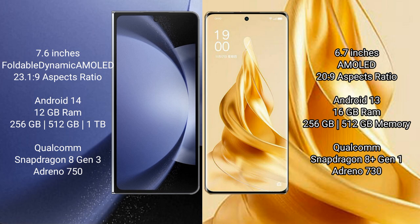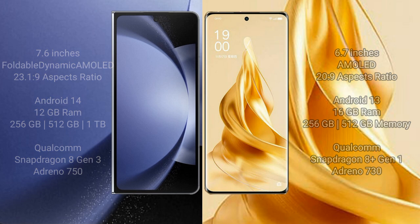Samsung Galaxy Z Fold 6 comes with 12GB RAM and 256GB, 512GB, or 1TB internal storage, powered by a Qualcomm Snapdragon 8 Gen 3 processor with GPU Adreno 750. Oppo Reno 9 Pro Plus comes with 16GB RAM and 256GB or 512GB internal storage, powered by a Qualcomm Snapdragon 8 Gen 1 processor with GPU Adreno 730.